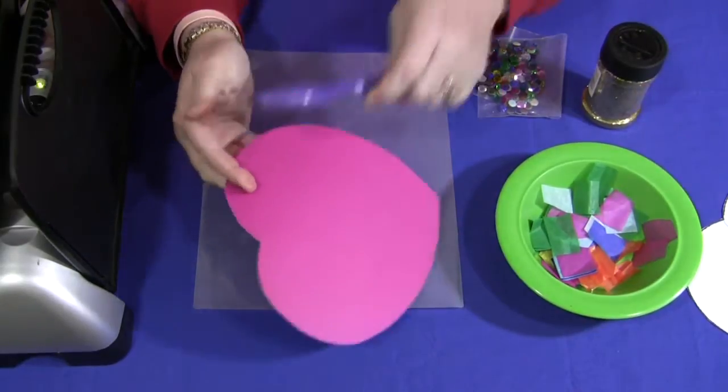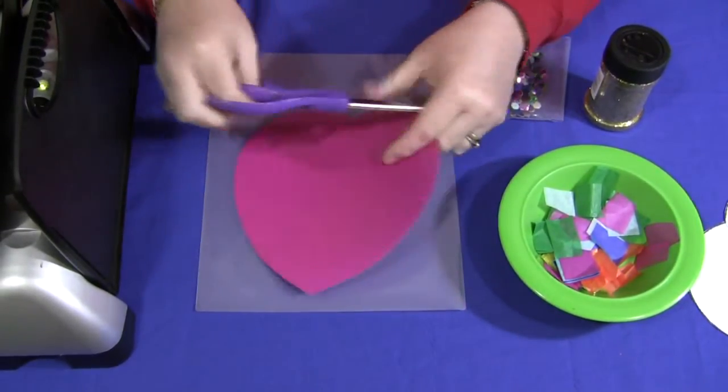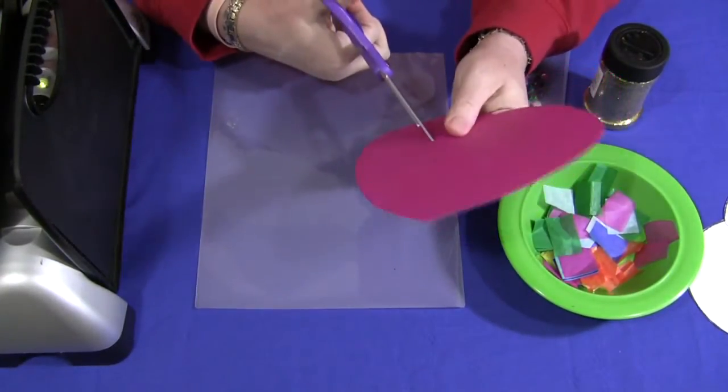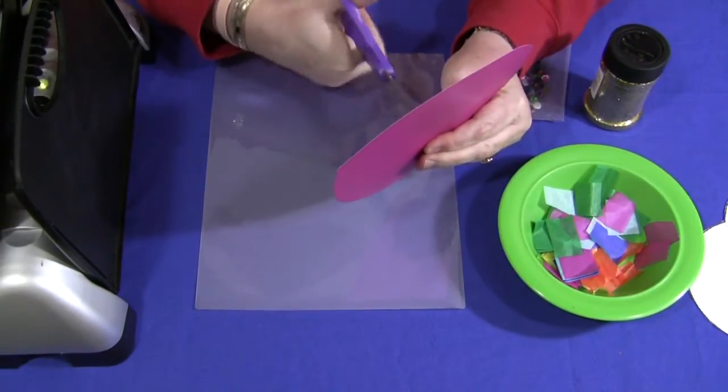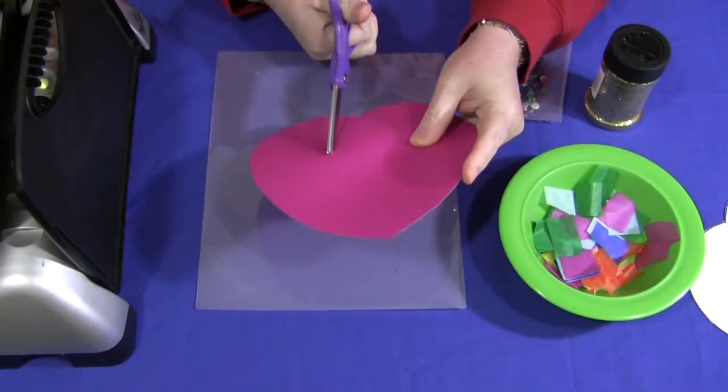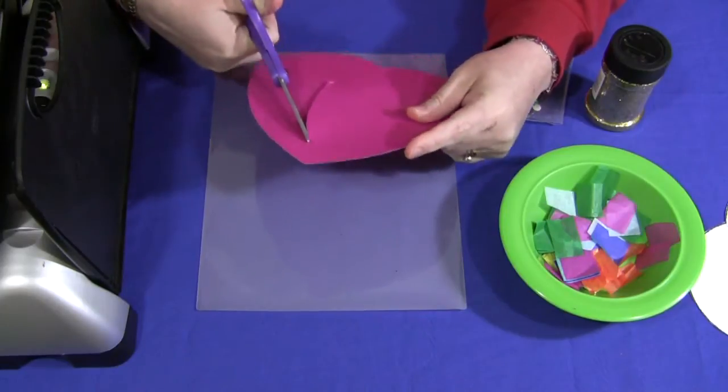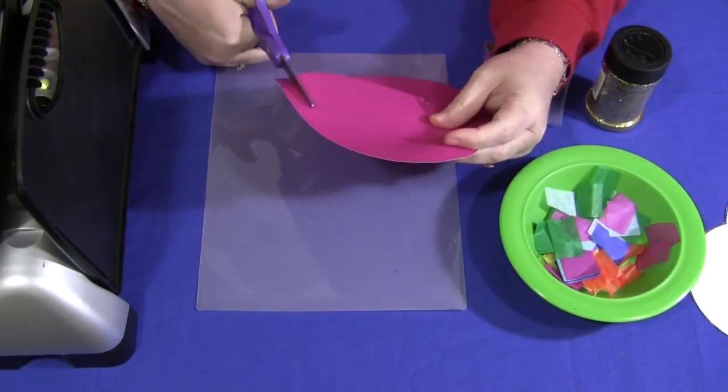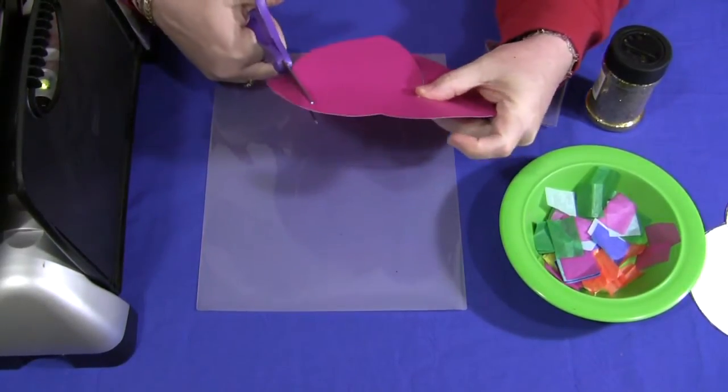So once you have your heart pattern on construction paper, you're going to want to cut the center out for each child. Unless you have older children, they can do it themselves. But I recommend that you start with the base of the heart, having the heart cut out, the center of the heart cut out. And you would just simply stick your scissors in and then work your way around. And maybe leave about three quarters of an inch border around the heart area or whatever pattern you're going to be using for your sun catcher.